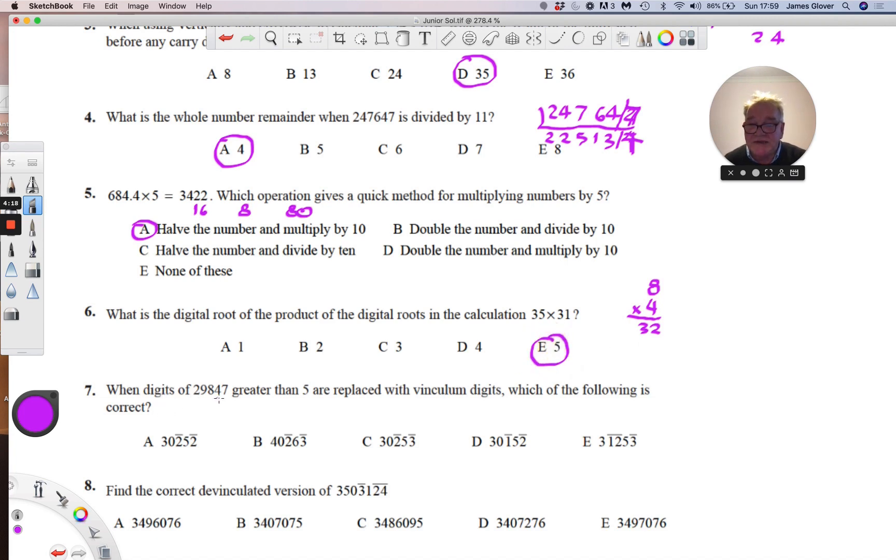When these digits greater than 5 are replaced with winculum digits, which answer is correct? So if we partition the number here, the first part will give 3 0 bar 2, and then we have 5 bar 3, and that corresponds to answer C.